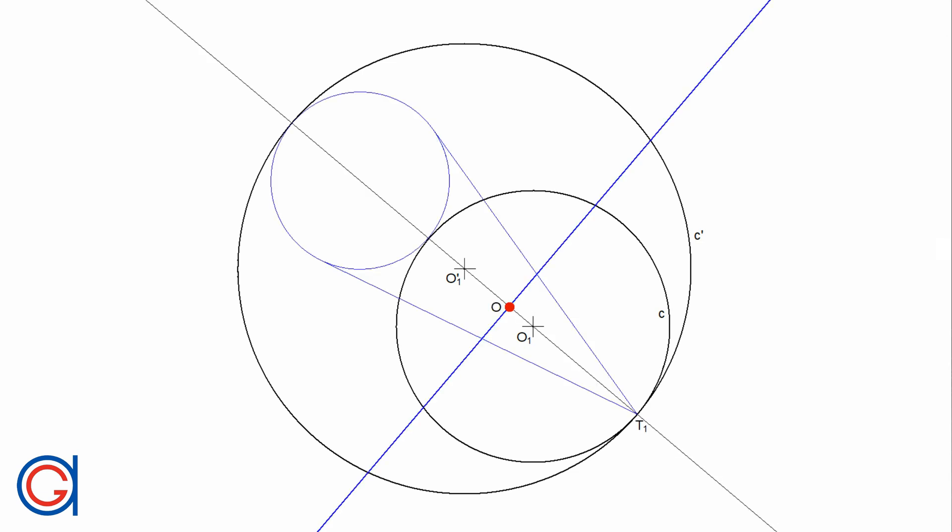First we have to construct a line R through both center points O1 and O'1 of the given circles C and C'. On this line R we construct a circle C2 which is tangent to both of the given circles C and C'.